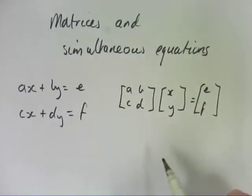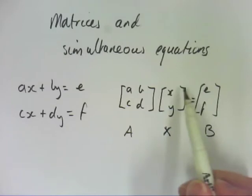If we relate that back to what we were doing before, we have matrix A multiplied by matrix X equaling matrix B. So by finding the inverse of A, you can find out the mystery values for X and Y. So I might do an example with you now.